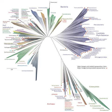As we here and there see a thin straggling branch springing from a fork low down in a tree, and which by some chance has been favoured and is still alive on its summit, so we occasionally see an animal like the Ornithorhynchus or Lepidosiren, which in some small degree connects by its affinities two large branches of life, and which has apparently been saved from fatal competition by having inhabited a protected station.